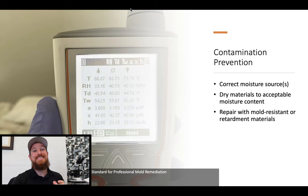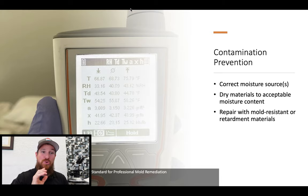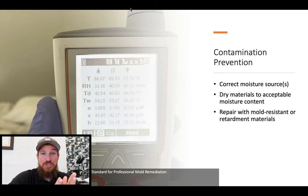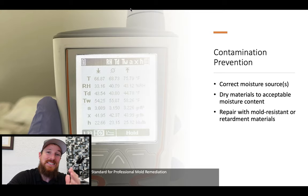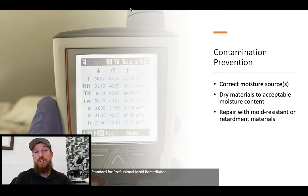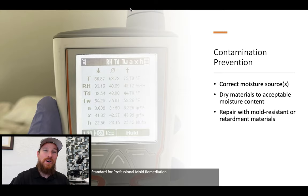So let's get into contamination prevention. We need to correct the moisture issues at hand — correct moisture sources. Nobody can guarantee against a pipe burst, pipe leak, or roof leak, but what we can guarantee against is making sure the same issues that once transpired are not happening again. If we had a pipe leak, we want to address that pipe, look down the pipe, and make sure no other fittings look like they're going to go in the short term as well. We also need to dry materials to an acceptable moisture content.